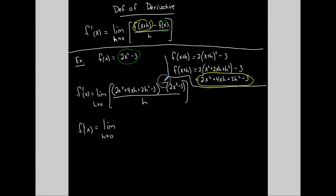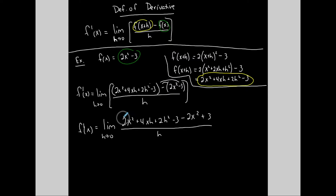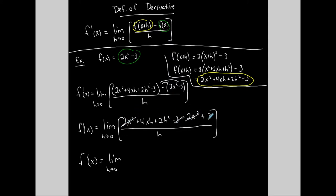Be careful here because this minus is going to distribute, so both signs are going to change. The first expression stays the same: 2x squared plus 4xh plus 2h squared minus 3, then minus 2x squared and plus 3 when I distribute that negative into the second portion of the numerator. Notice that all the terms without an h in the numerator are going to cancel.